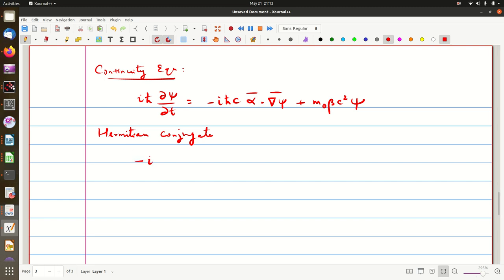So, minus i ℏ ∂ψ*/∂t, because i is complex, by ∂t, equals plus i ℏ c. But now α is a matrix and ∇ψ is a matrix. So ∇ψ* and ψ is complex, so you get that. Alphas are real the way we chose them, so ·α⃗ plus m₀ c² ψ† times β.